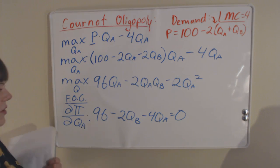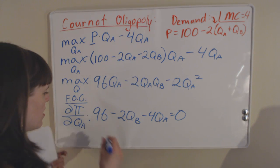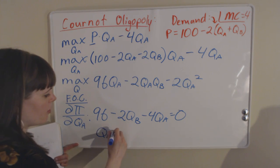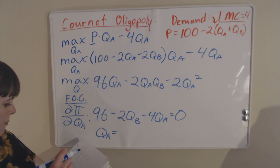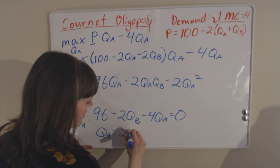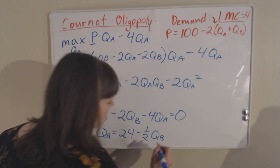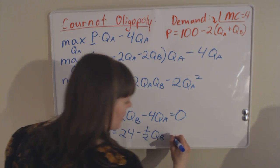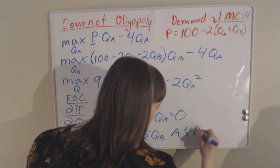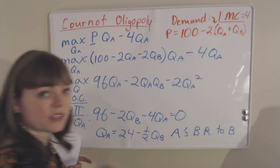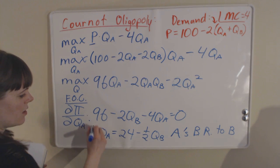Based on that, we're going to get a best response function which is going to give us what quantity should firm A produce as a function of firm B's quantity. That's going to give us QA equals 24 minus 1 half QB. This is firm A's best response function to B. This is A's best response to B's choice of quantity.